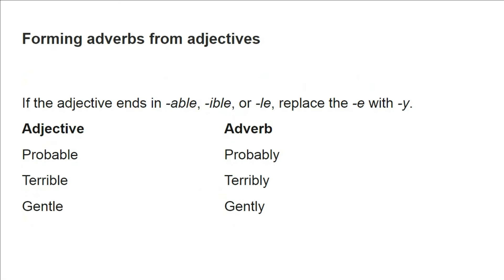The third procedure: if the adjective ends in -ble, -ible, or -le, replace the final e with y. For example: probable → probably, terrible → terribly, gentle → gently. So we remove the e and add y to convert these adjectives into adverbs.